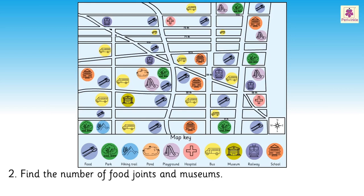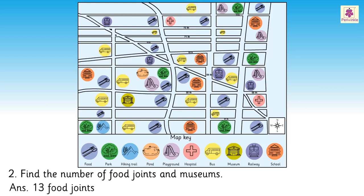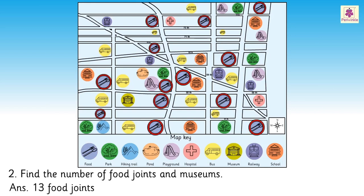Question 2: Find the number of food joints and museums. Look at their symbols. On counting, we get the answer as 13 food joints and one museum.